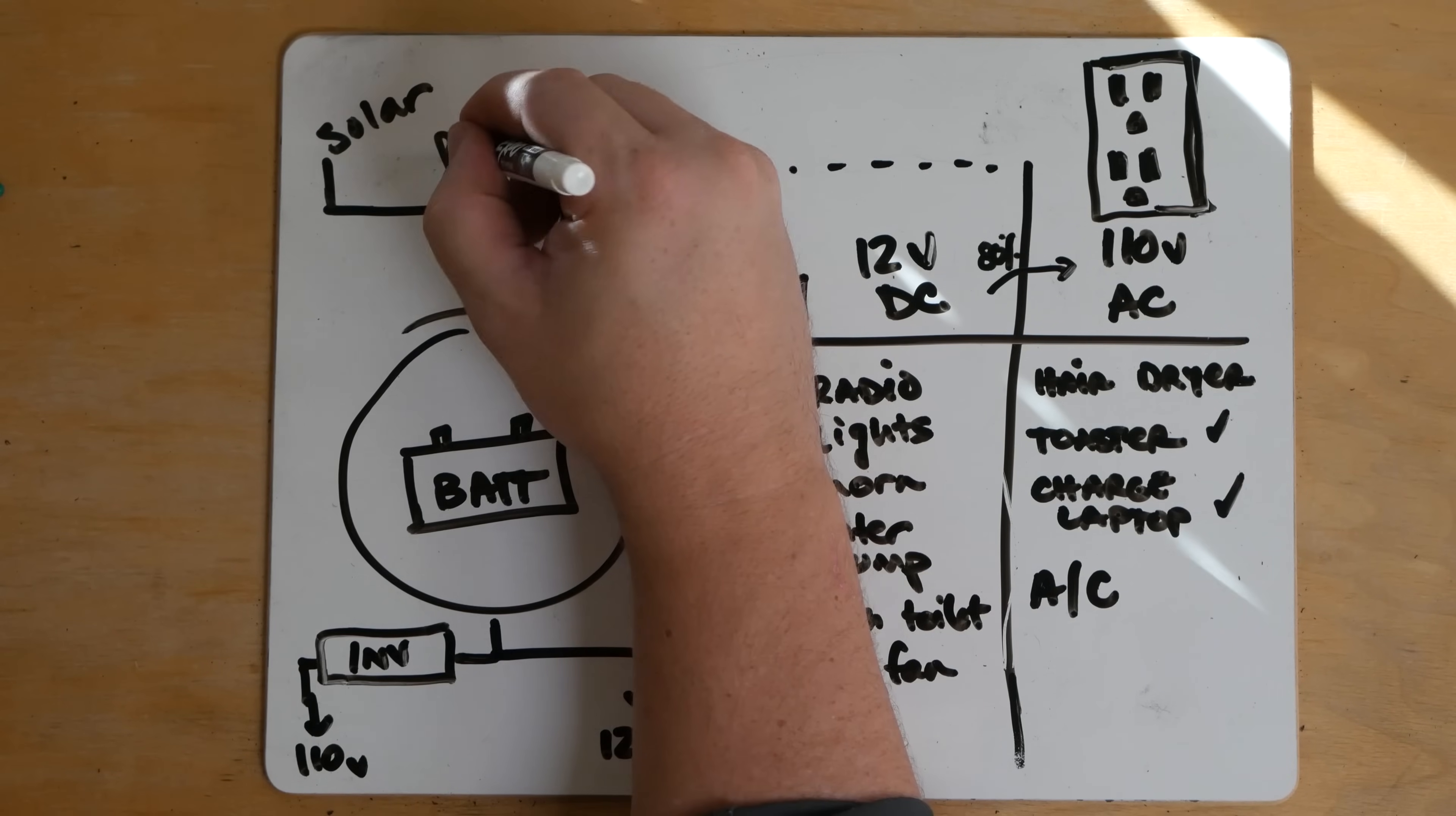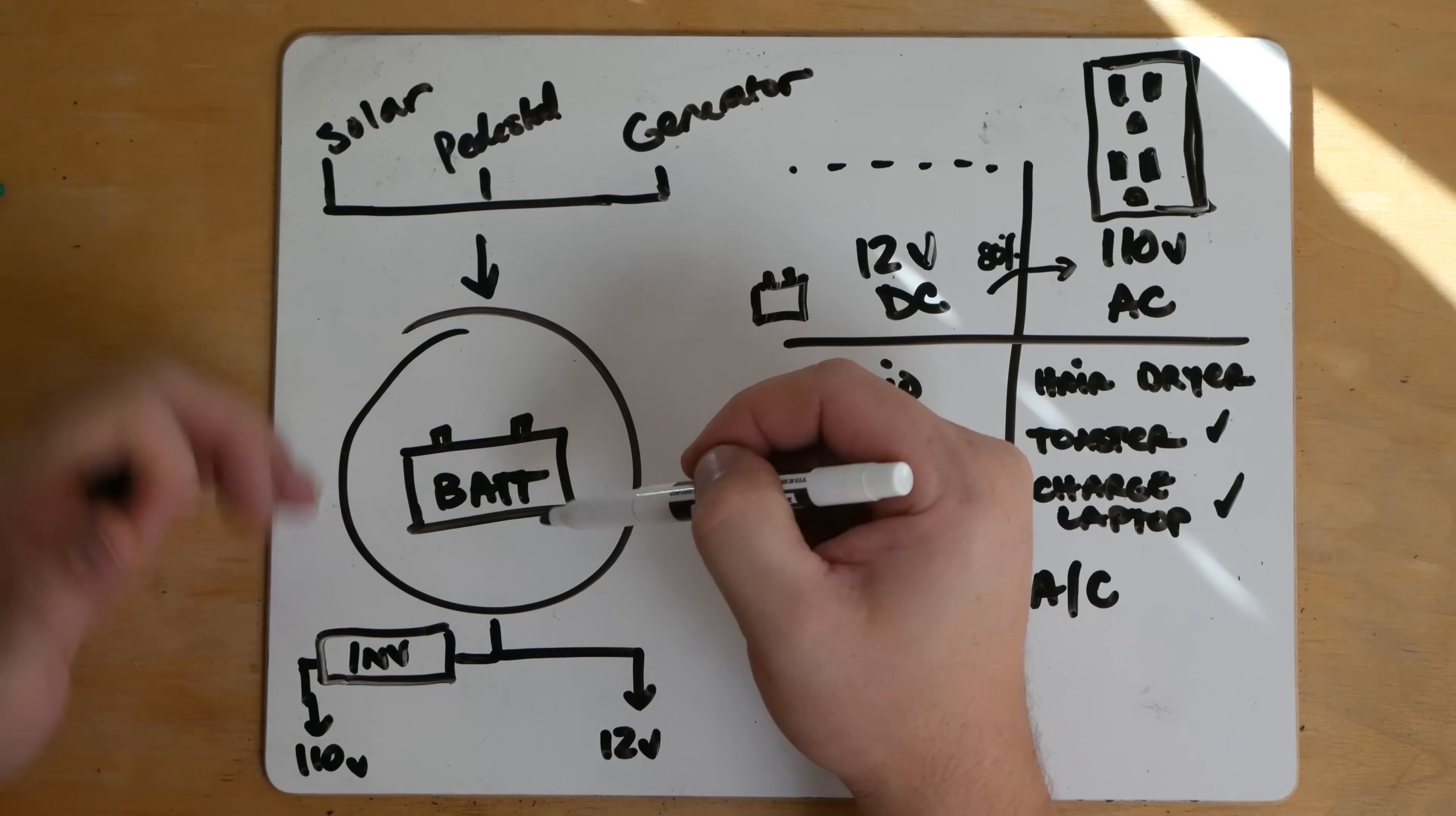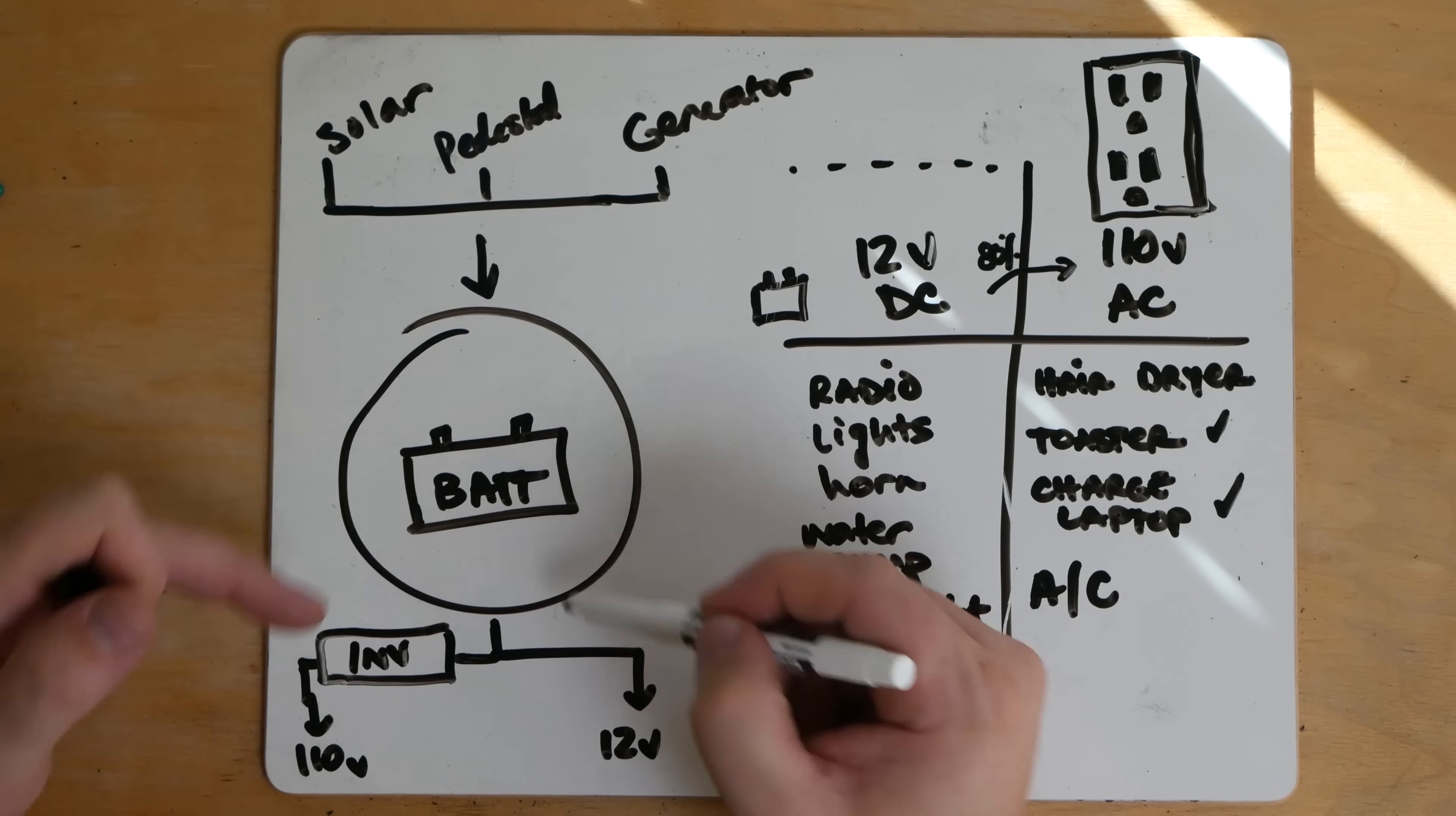And the ways that we charge our battery there are three. Solar, pedestal at an RV park, or a generator. So your battery doesn't really care what it's getting power from. These are the three ways you charge a battery. And these are the two ways you drain a battery. The bigger your battery, the longer it takes to charge. But the bigger your battery, the more you can drain in between charges.